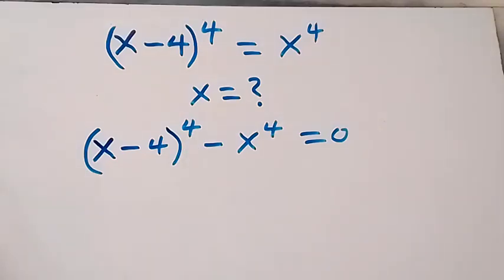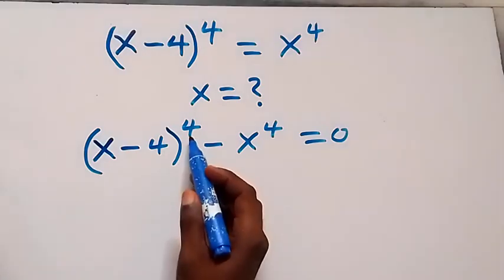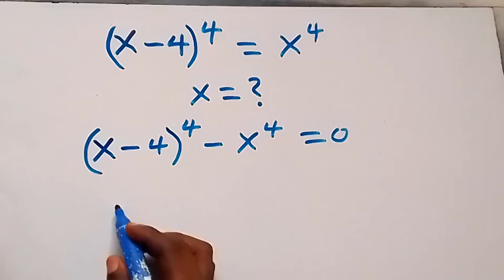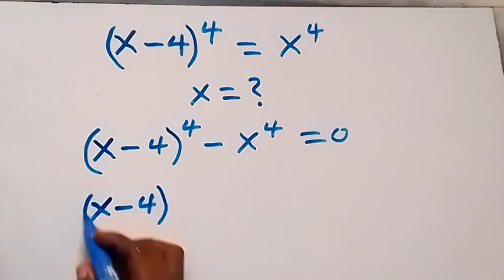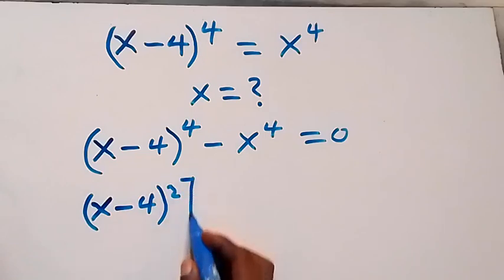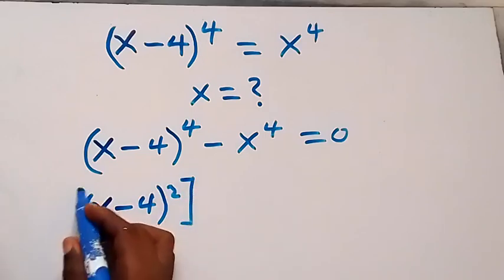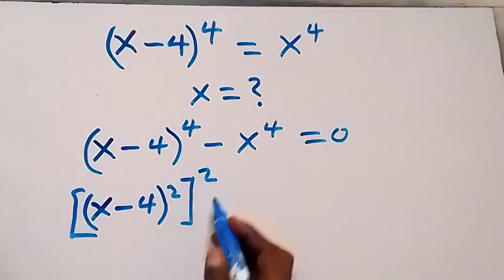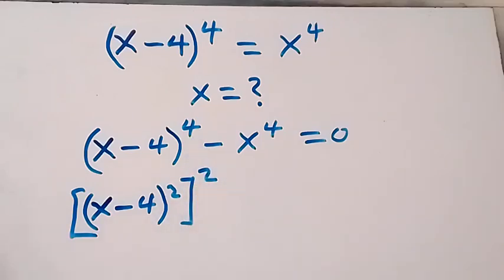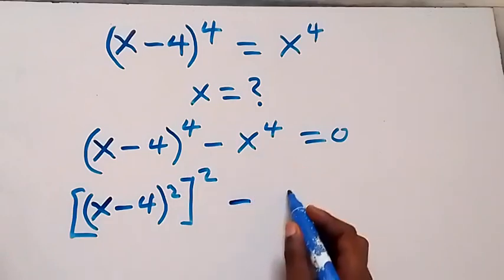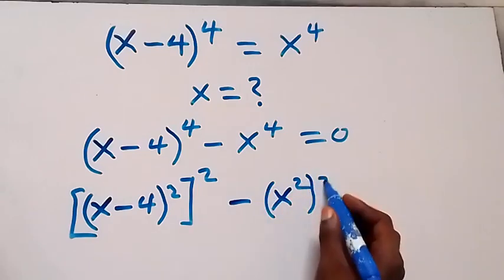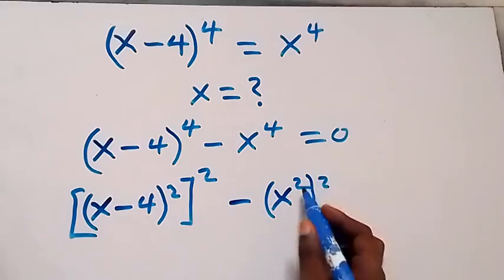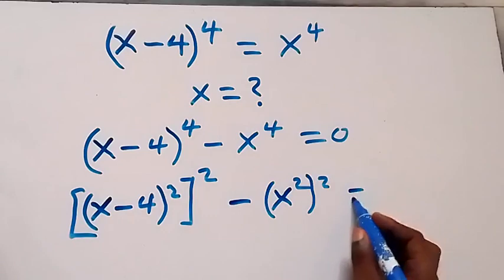(x minus 4) raised to power 2, which is all raised to power 2. We have (x minus 4) squared, raised to power 2 — multiplying, we still have x raised to power 4. Same thing here: x squared then raised to power 2 is the same as x raised to power 4. All equals to zero.